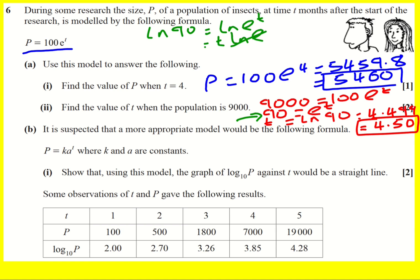Next up it's suspected that a more appropriate model would be to use p equals k some constant times a to the t where a is something other than e. We're asked to show that using this model the graph of log p against t would be a straight line. We've got p equals k a to the t, what we want to do is take log of both sides so log to base 10 of p equals log to base 10 of k a to the t. Then this is going to be log base 10 of k plus log base 10 of a to the t.